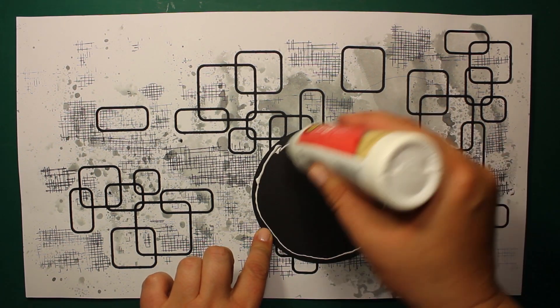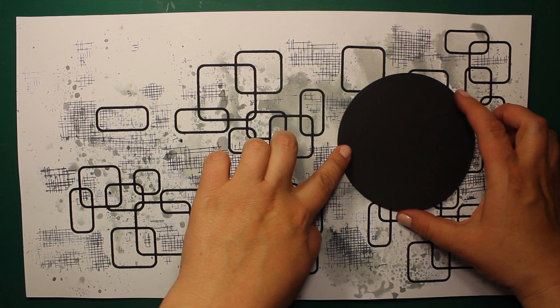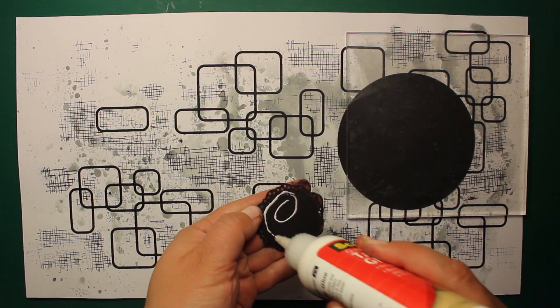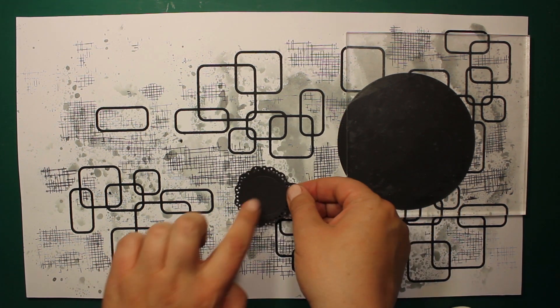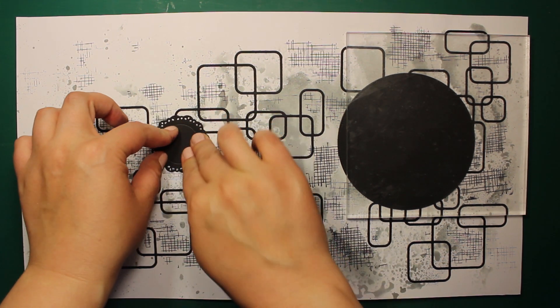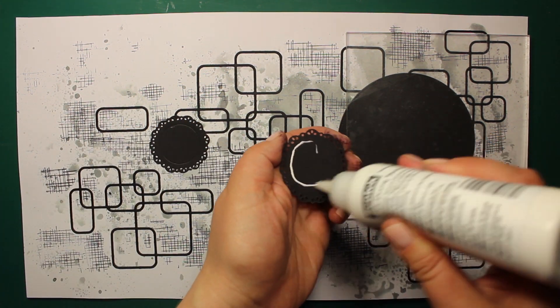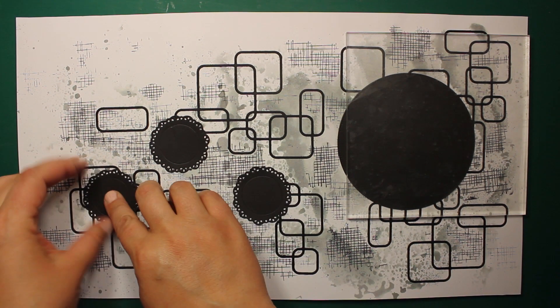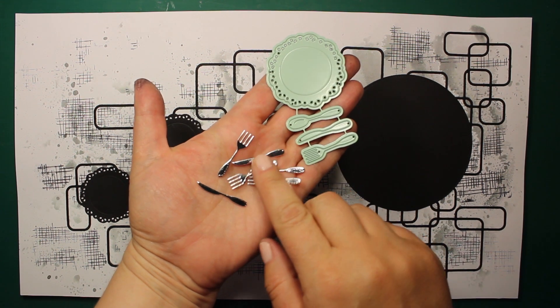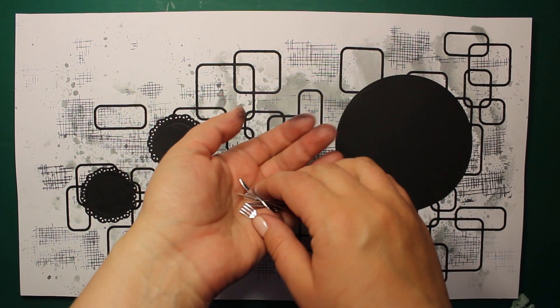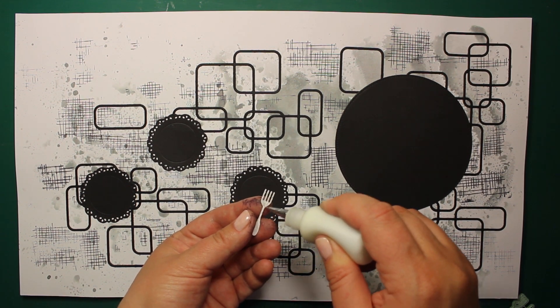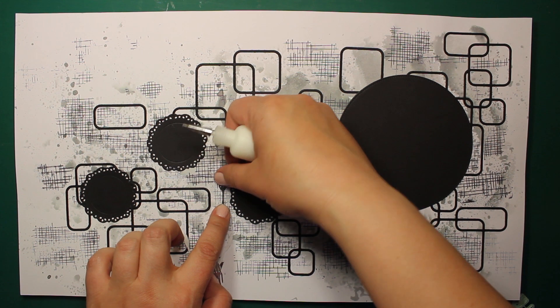Now I can attach all the die cuts that I have shown you at the beginning. I like using quick-drying tacky glue but any type of adhesive will work. And I couldn't resist using those cute little knives and forks too. I've die cut them out of silver mirror cardstock and I'm simply sticking them by the plates where they belong.